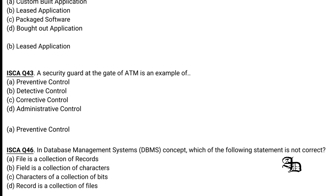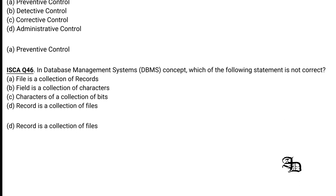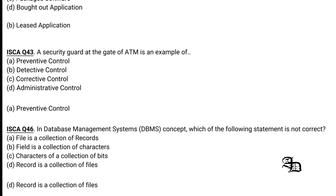Question 16: In database management system concepts, which statement is not correct? A file is a collection of records, a field is a collection of characters, and a character is a collection of bits — all correct. However, 'record is a collection of files' is incorrect because a file is a collection of records, not the other way around. Option D is the correct answer.